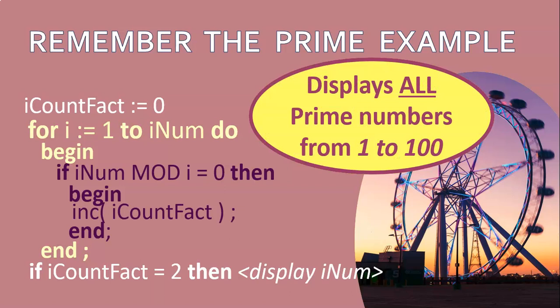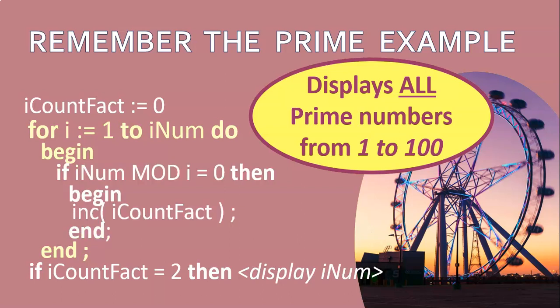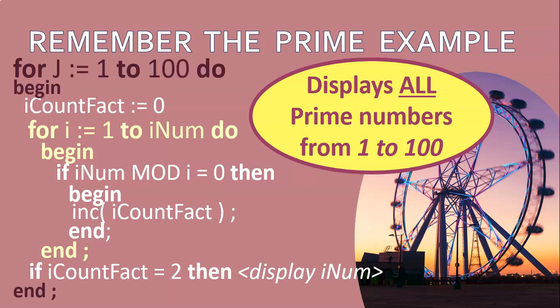But there's only one loop there, so what does a nested loop mean? What if I want to display all the prime numbers from one to a hundred? I would check one using this algorithm, then two, then three, four, and five. So I'm doing a loop from one to a hundred, and inside that loop I'm doing this exact algorithm. The best suggestion I can give for nested loops: get your inner loop working first for one case, then expand it to the outer loop. I'll use a j variable from one to a hundred to apply that algorithm a hundred times.